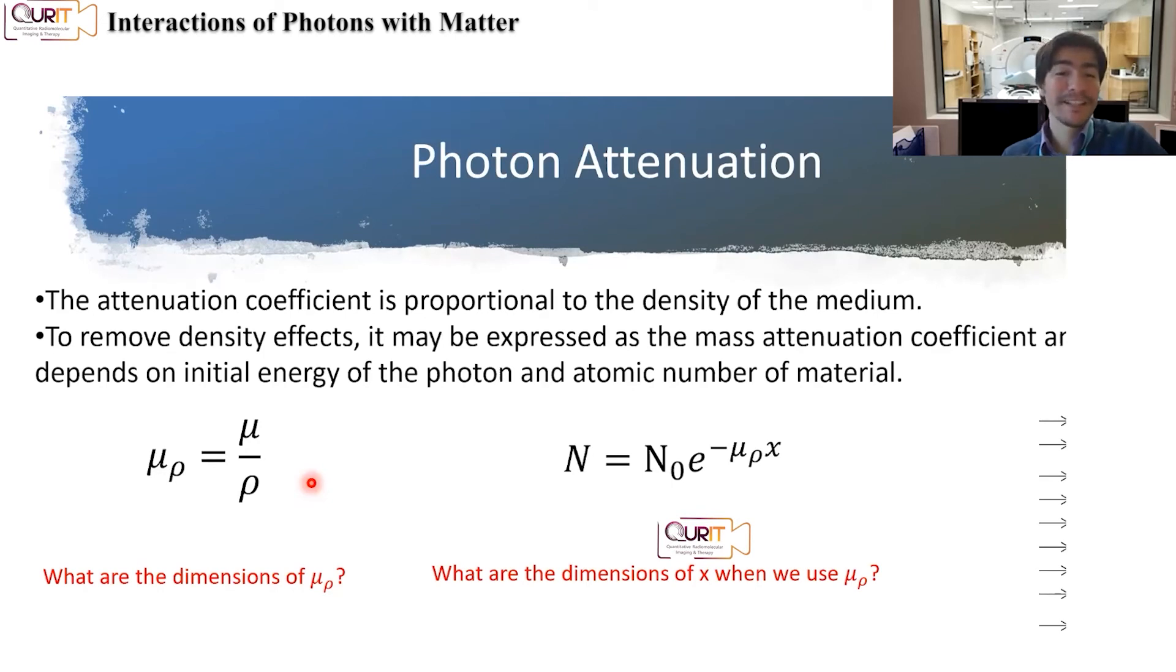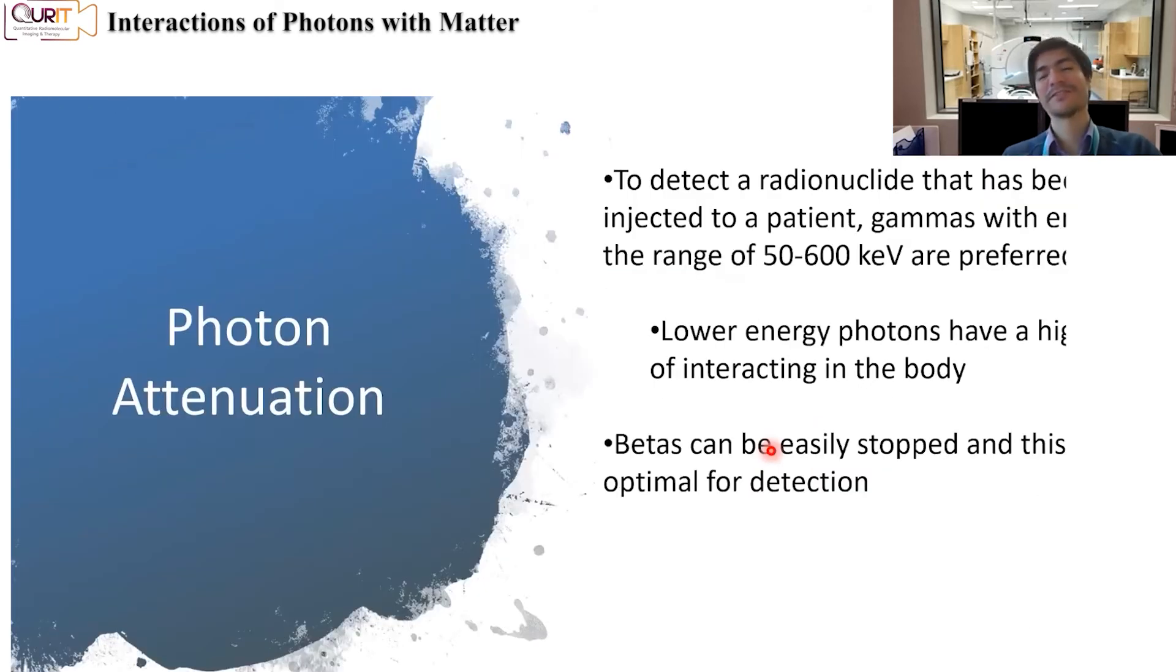Now we typically also remove density effects and we normalize this by the density. So we divide mu by the density. And this is what we call the mass attenuation coefficient. Now because we're dividing by the density, I'll leave you as a homework to look at what are the dimensions of that mass attenuation coefficient. And think that now because this has some other dimensions, we're looking at this thickness in other dimensions. So try to see what would be the dimensions of that x.